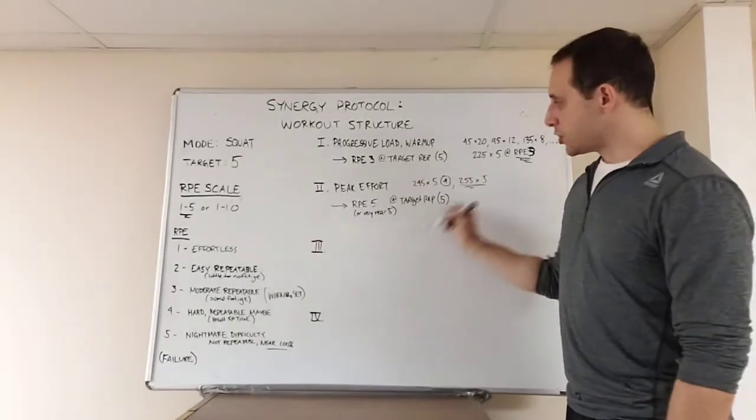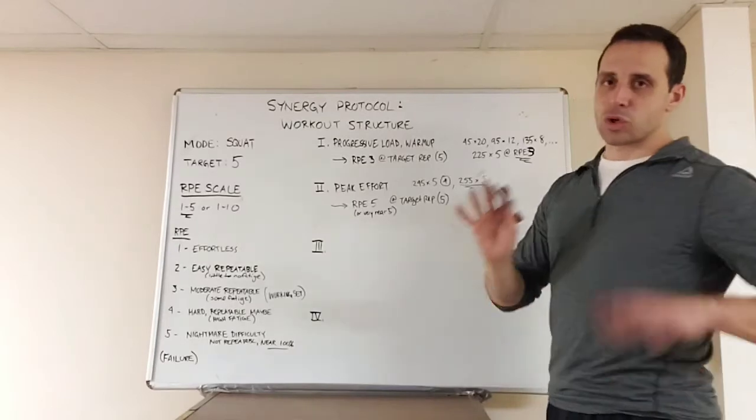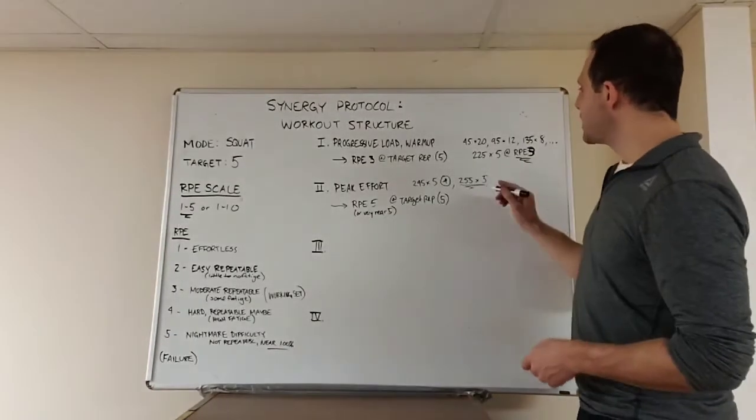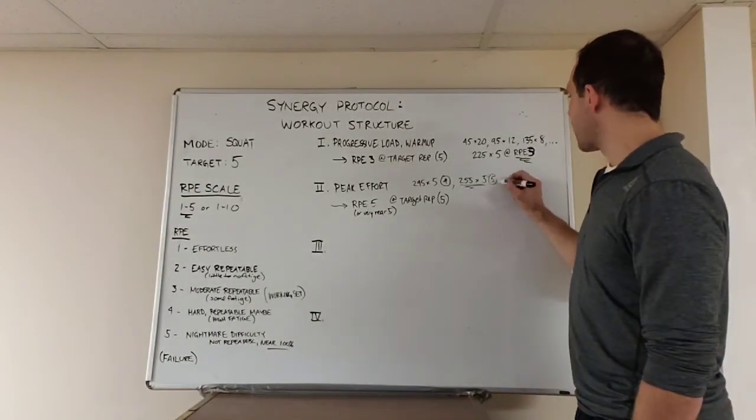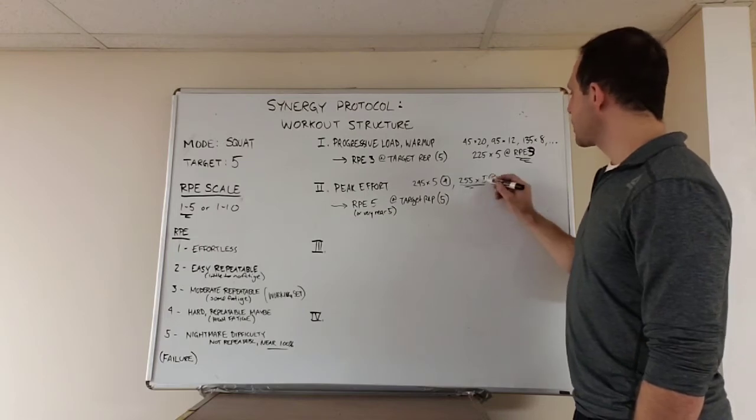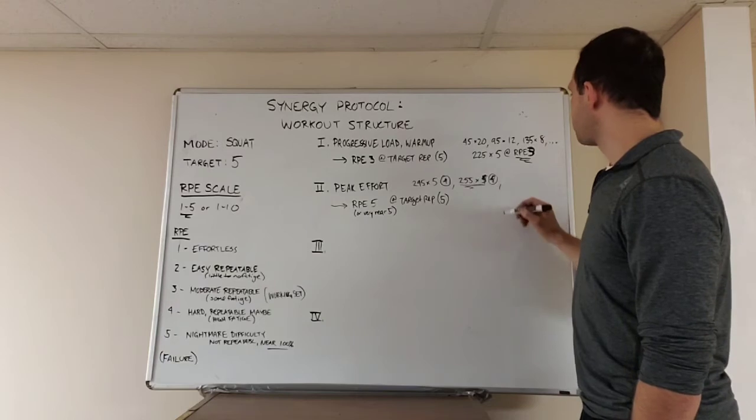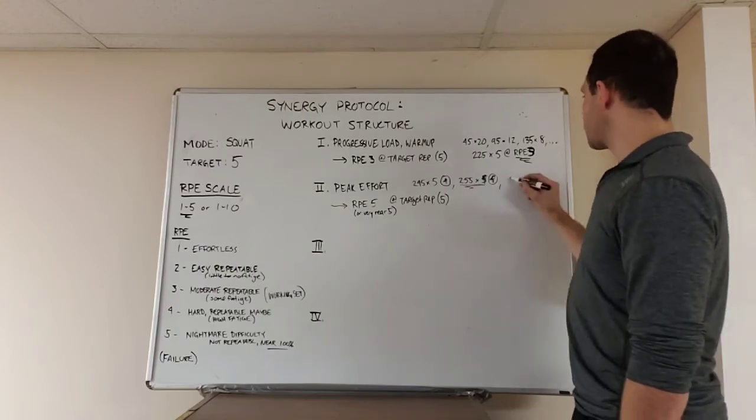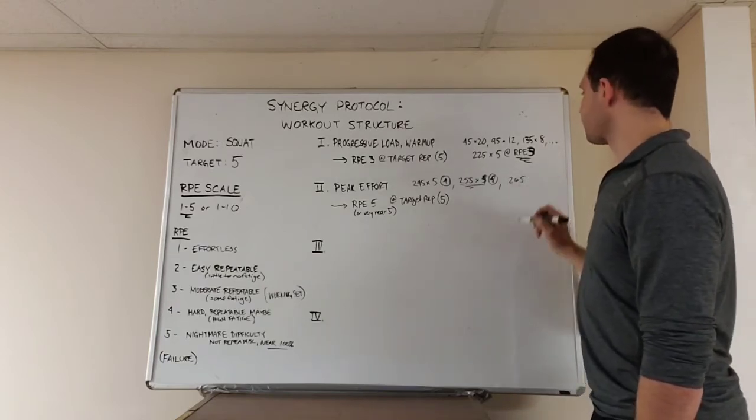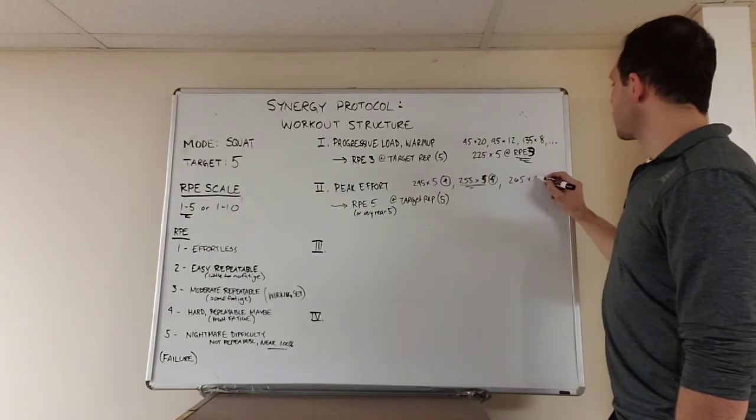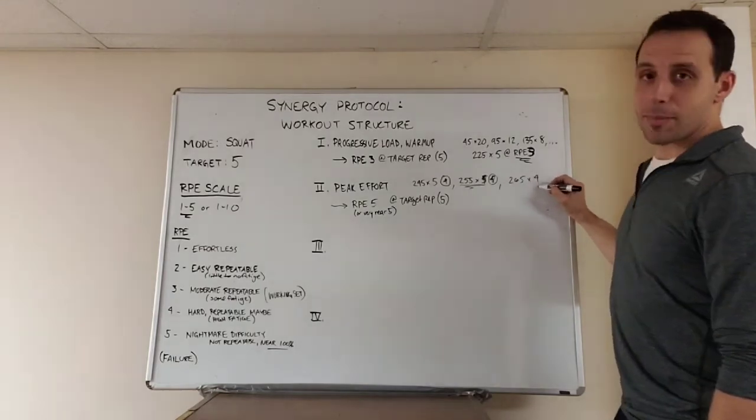But if he didn't do this, and he didn't get a 5. Let's suppose he did this and it was a 4 again. And then he moves up. He goes for 265. He does it. But he gets only 4 reps.